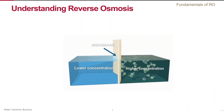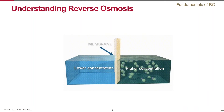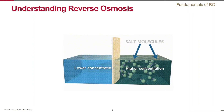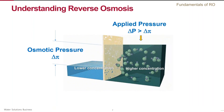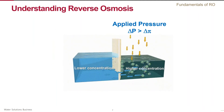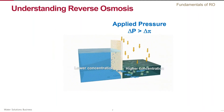Water will continue to flow through the membrane in that direction until the concentration is equalized on both sides. At equilibrium there is no more flow; however, the compartment that once contained the high-concentration solution now has a higher water level. The difference in height between the two compartments corresponds to the osmotic pressure of the solution, delta pi. In reverse osmosis, we apply pressure greater than the osmotic pressure on the compartment that once contained the high-concentration solution.